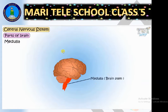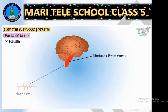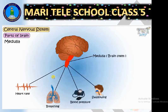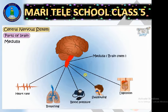The third part is called the medulla or brain stem. It is also a very important part. It controls heart rate, heartbeat, breathing, and blood pressure — essentially controlling blood circulation — as well as swallowing and digestion, and all other involuntary actions which are not under our conscious control.